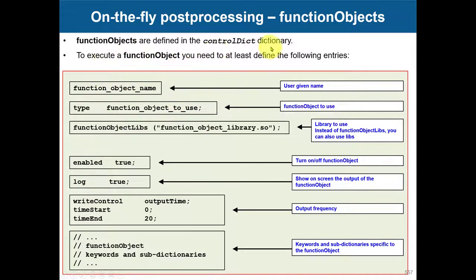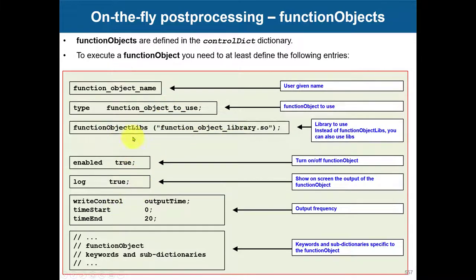All function objects are defined in the controlDict. We have seen this in previous tutorials. At the end of the controlDict, you have a section called functions where you can put them. This is the general structure: you give it a name, then the type of function object you want to use, you call the library, and then there are some options depending on the function object.